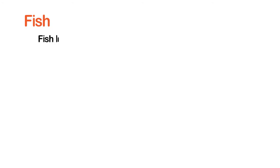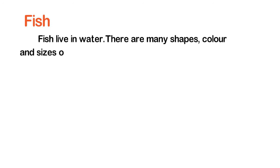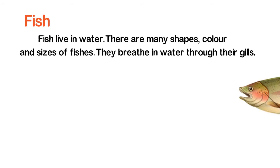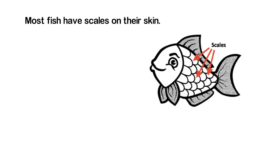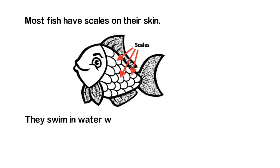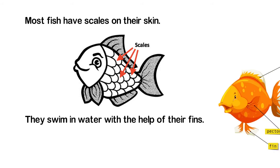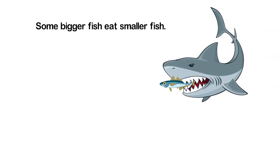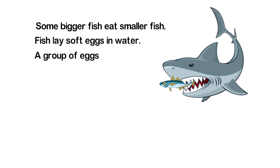Fish live in water. There are many shapes, colors, and sizes of fish. They breathe in water through their gills. Most fish have scales on their skin. They swim in water with the help of their fins. They eat insects and plants, and some bigger fish eat smaller fish. Fish lay soft eggs in water; a group of eggs is called spawn.